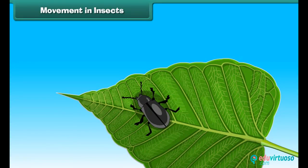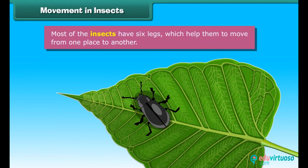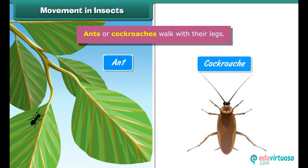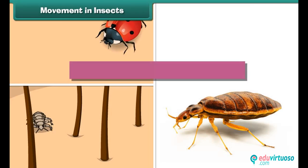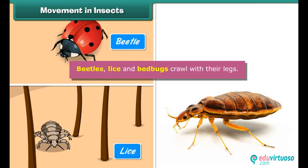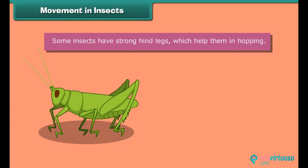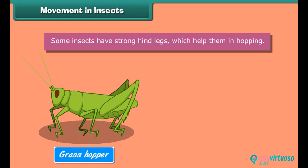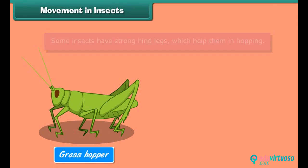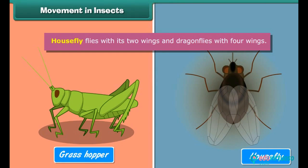Movement in insects: Most insects have six legs which help them move from one place to another. Ants and cockroaches walk with their legs. Beetles, lice, and bed bugs crawl with their legs. Some insects have strong hind legs which help them in hopping. Many insects have wings and can therefore fly — the house fly flies with two wings and the dragonfly flies with four wings.